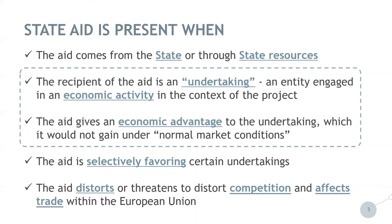Probably the most difficult aspect to determine is whether there is an advantage which an undertaking would not have obtained under normal market conditions, or whether undertakings are relieved of costs they would normally have to meet. Besides determining the presence of aid at the level of project partners — direct aid — it is also necessary to consider whether entities which are not project partners receive any advantage, that is, whether there is indirect aid. For example, free-of-charge services such as consultancy or trainings given by project partners to companies would constitute indirect aid.